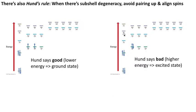Now, there's also this thing called Hund's rule. So when there is this thing called subshell degeneracy, what we do is we avoid pairing up and we align spins. Let me explain that. So this is a whole shell. Degeneracy means same energy.